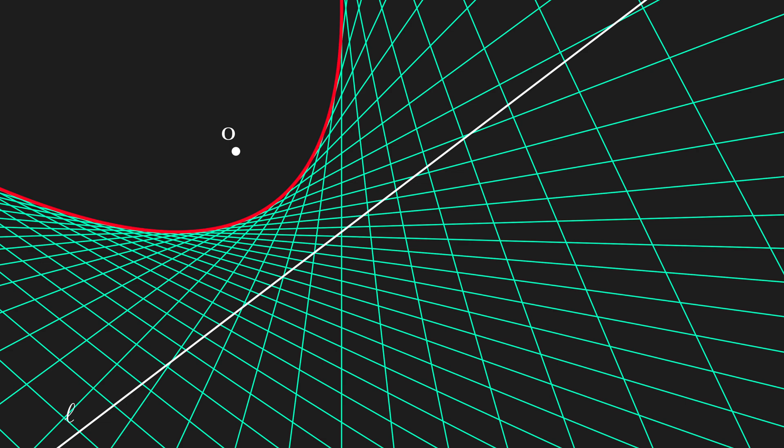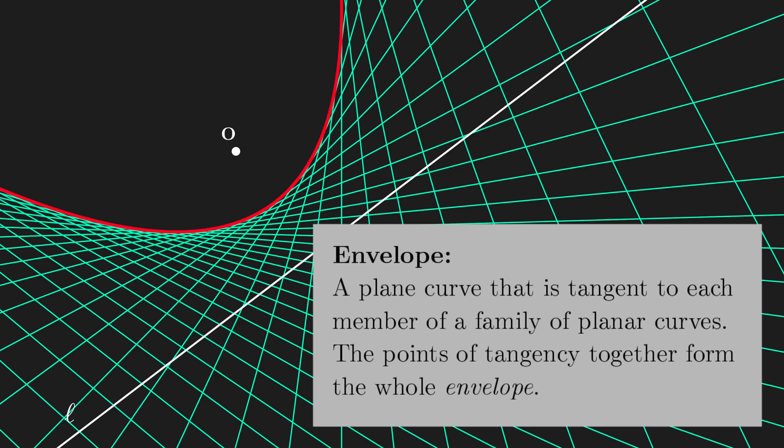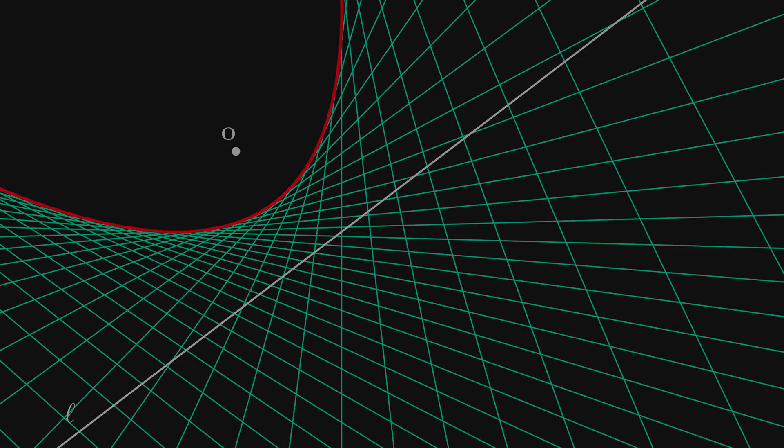With this construction we just obtain a parabola defined as an envelope. An envelope is a plane curve that is tangent to each member of a family of planar curves. The points of tangency together form the whole envelope. In this case, each perpendicular bisector is tangent to this parabola. It is not difficult to prove that the envelope is in fact a parabola—we just need to remember its definition.